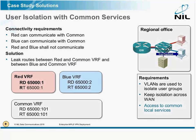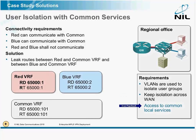We use VLANs to isolate the user groups. We need to keep isolation across WANs, so MPLS VPN in one way or the other. But a new requirement: they both have to access the common server sitting in the original office. Red has to communicate with common, blue has to communicate with common, but red and blue shall not communicate.